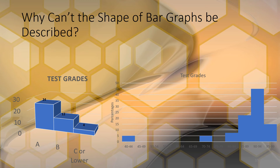We've talked about all the shapes of histograms, but now let's talk about why you can't describe the shape of a bar graph. Be very careful to only describe the shapes of histograms, not bar graphs, even though they look similar. On the left we have a bar graph — the categories are not equally spaced; an A was 10 points wide, a B was 10 points wide, but C covers 70 points. On the right we have a histogram with equal widths of 5, going from the lowest to the highest value.